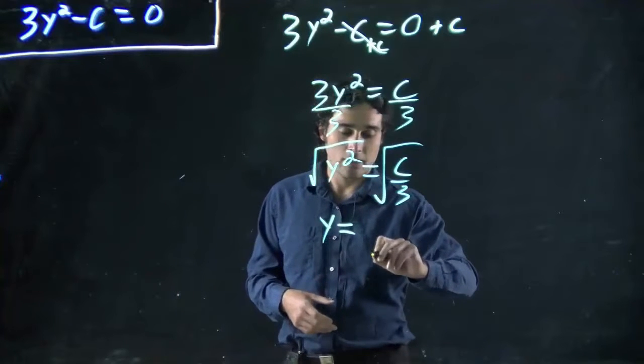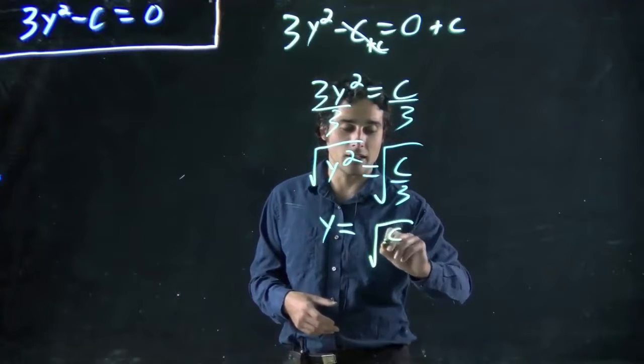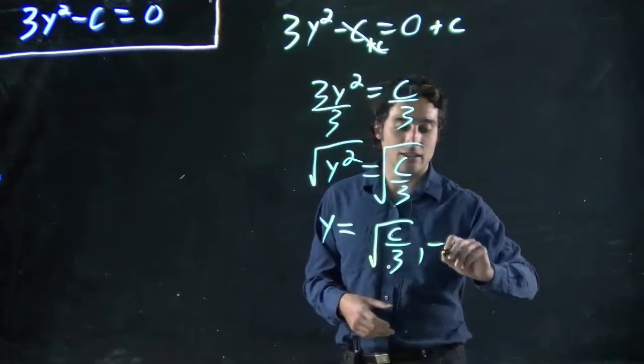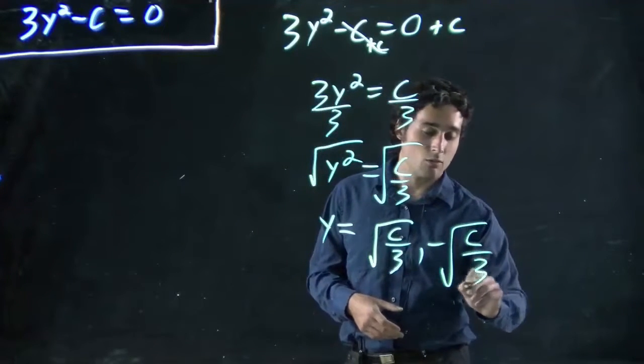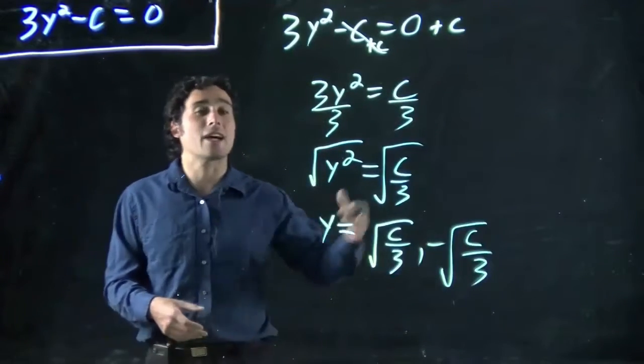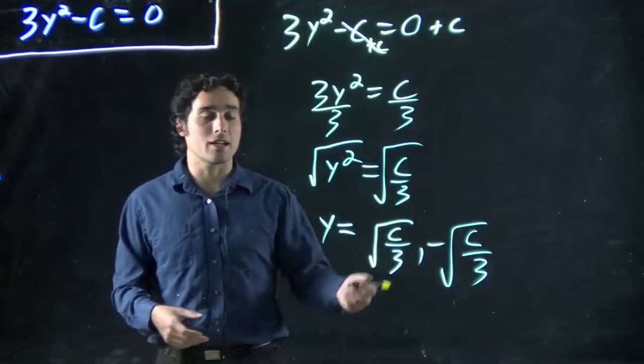So it might sound ugly reading out those numbers, but these would be the two solutions. And whatever c turned out to be, remember, it doesn't matter that it's a variable. The math was the same. Later on, we might plug in a number.